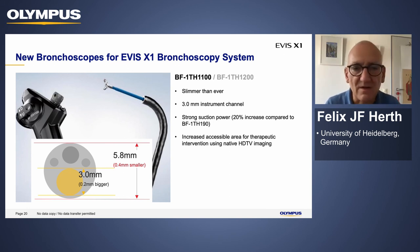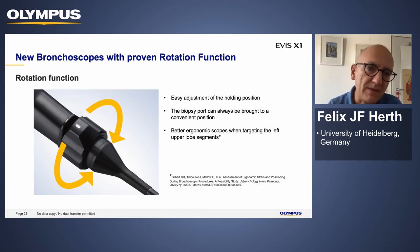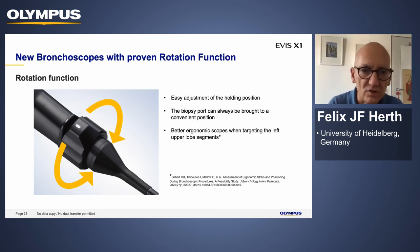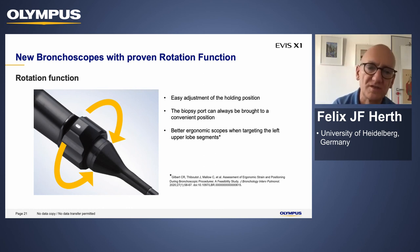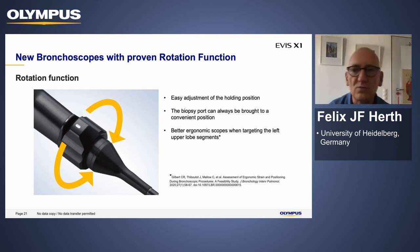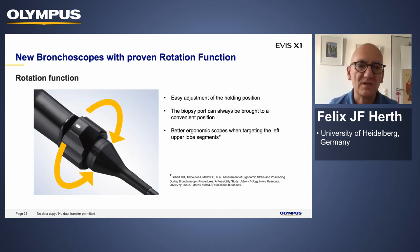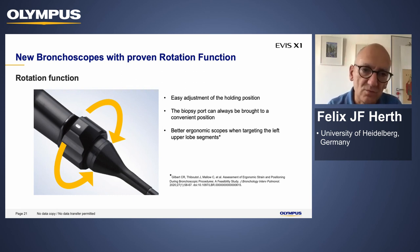Like the last series, we have the rotation function. Publications have shown that rotating the working channel makes it easier to reach the upper lobes or the B6 segments without bending yourself or your hands awkwardly. It's especially supportive for nurses, who don't have to move around you to help insert instruments into the working channel. The rotation function is now standard, and it has been adapted to the new scope series.